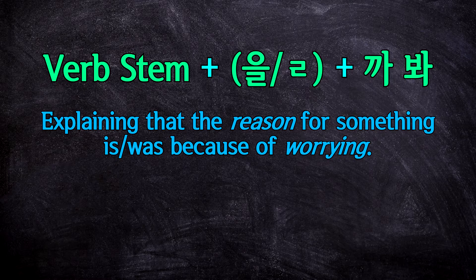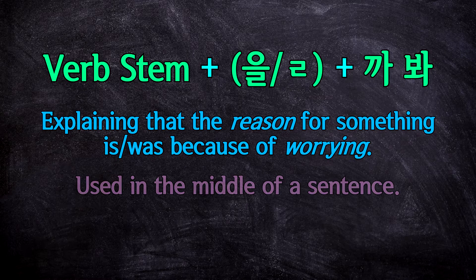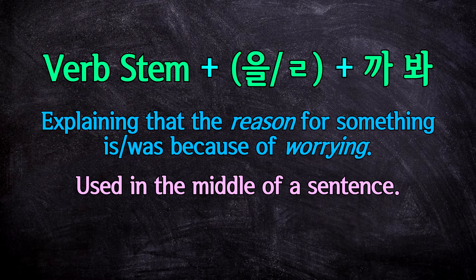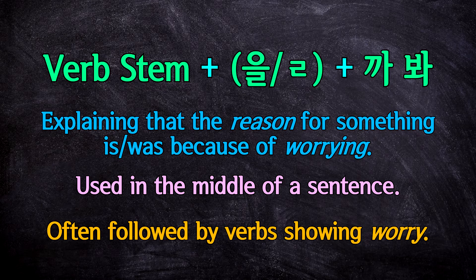Now let's talk about how you can use this form. It's used in the middle of a sentence, so the reason will come first, followed by this form, and then what you did. Typically, since this form is used to explain that you're worried, it will often be followed by verbs such as 걱정하다, meaning to worry, and others.